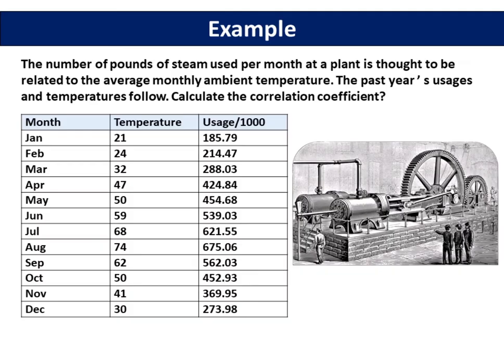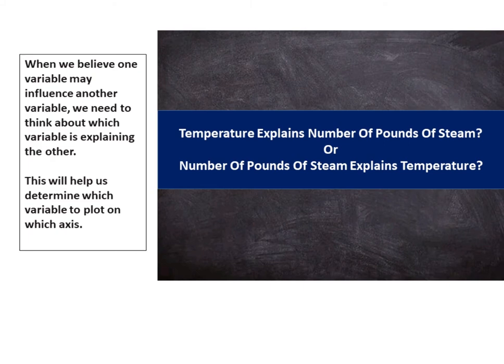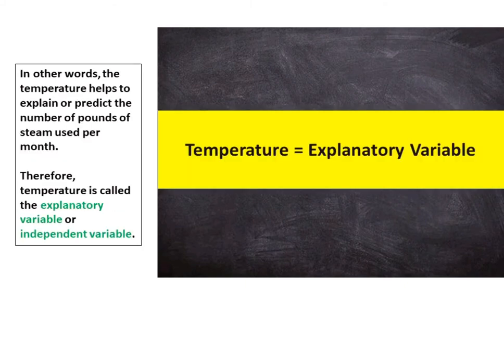Let's look at an example. The number of pounds of steam used per month at a plant is thought to be related to the average monthly ambient temperature. The past year's usages and temperatures follow. When we believe one variable may influence another variable, we need to think about which variable is explaining the other. This will help us determine which variable to plot on which axis. The temperature may affect the number of pounds of steam used per month, but the number of pounds of steam used per month does not affect the temperature. In other words, the temperature helps to explain or predict the number of pounds of steam used per month.